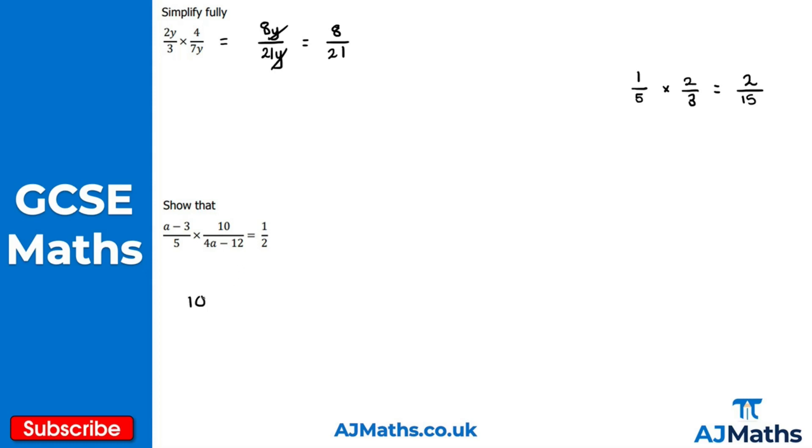So 10(a-3) over 5(4a-12), multiplying both denominators together.